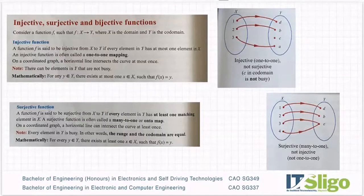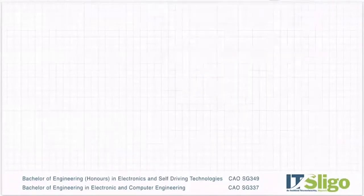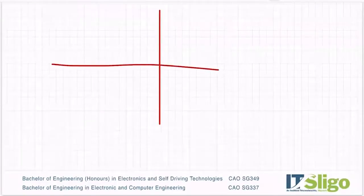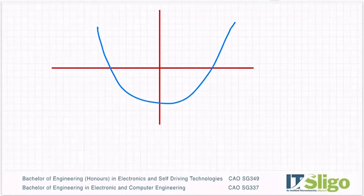I want to go through now injective, surjective and bijective functions and try to wrap our heads around what they mean. These are all the different types of functions you can have. What I probably should have done first was talk a little bit about what a function actually is and what's called the vertical line test. If I draw a quadratic function, for example, you know this is called a quadratic function.